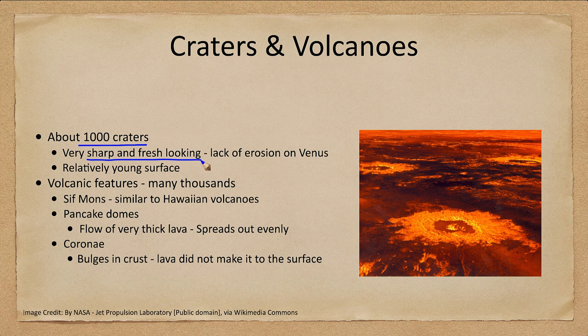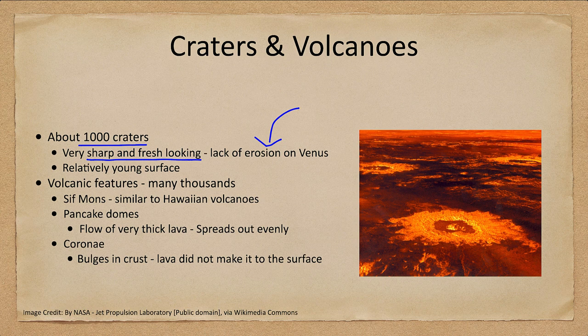We also notice that the craters are very sharp and fresh looking — they look like they've just formed. Now we know they didn't all just form recently, but this can also be caused by a lack of erosion. On Earth, we get erosion by wind and water, but we don't get that on Venus. Venus has no water, and it has a very still, stagnant, thick atmosphere, so it doesn't even have a lot of wind erosion. But we do know that the surface is relatively young, at least compared to that of Earth.